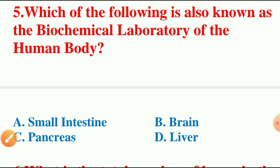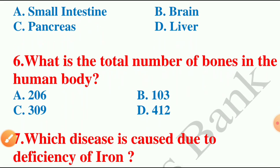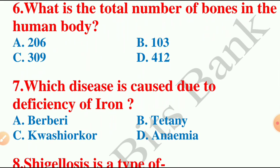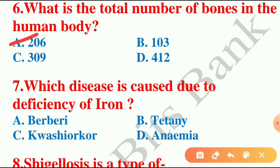Moving on to question number six: what is the total number of bones present in the human body? The options are 206, 103, 309, or 412. The answer is option A — 206. There are a total of 206 bones in the human body. A key point: at the time of birth there are around 270 bones, and as the child reaches adulthood there are only 206 bones.